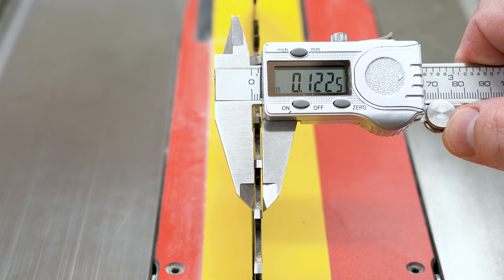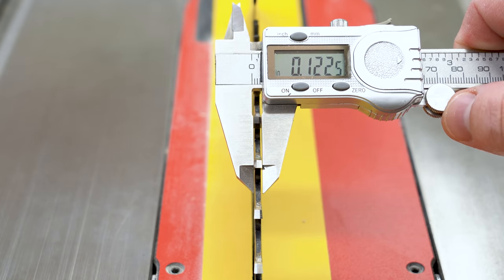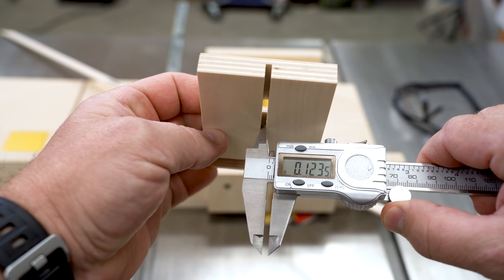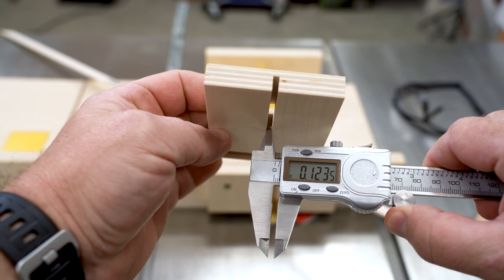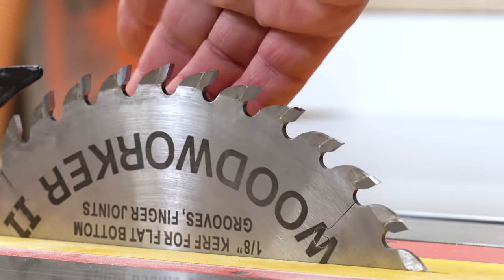It could be that the teeth measure a certain amount, but are positioned in a way that make the overall cut wider than what it really measures. And it could just be a simple combination of the run out of the arbor, the blade, who knows.